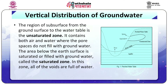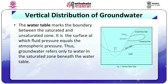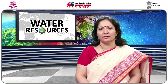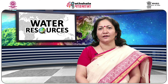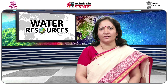The region of subsurface from the ground surface to the water table is the unsaturated zone. It contains both air and water, where the pore spaces are not filled with groundwater. The area below the earth's surface that is saturated or filled with groundwater is called the saturated zone. In this zone, all of the voids are full of water. The water table marks the boundary between the saturated and unsaturated zones. It is the surface at which fluid pressure equals atmospheric pressure. Thus, groundwater refers only to water in the saturated zone beneath the water table. The saturated and unsaturated zones are connected, and the position of the water table fluctuates seasonally and with the effects of groundwater abstraction.